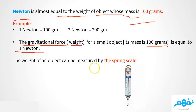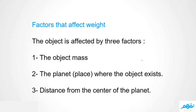The weight of an object can be measured using a spring scale — the measuring tool used to measure weight. Now I'd like to talk about a very important part of the lesson: the factors that affect weight. The first factor is the object's mass.